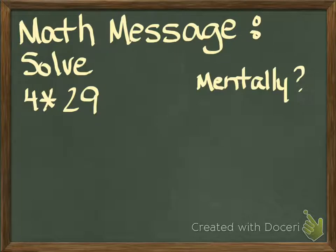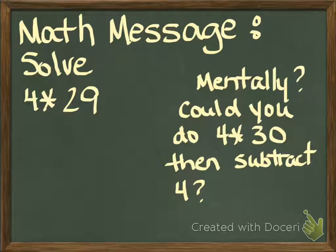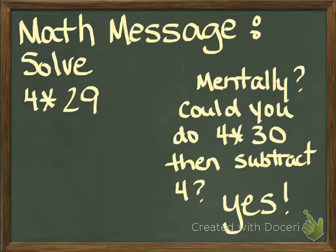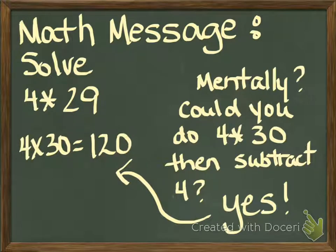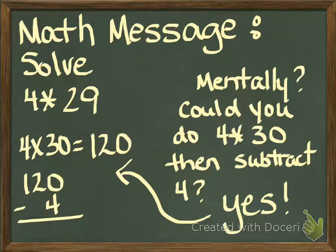Mentally, how would I do that? Could you do 4 times 30 and then subtract 4? Yes. Let's show you. If we do 4 times 30, we get 120, and we subtract 4 from that, we get 115. And that is the answer to 4 times 29.